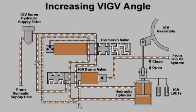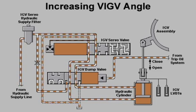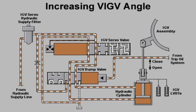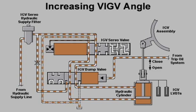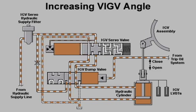The actuating arm of the hydraulic cylinder retracts and rotates the inlet guide vane ring counterclockwise, turning the variable inlet guide vanes to a greater angle.